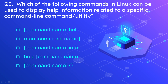Question number 3: Which of the following commands in Linux can be used to display help information related to a specific command or utility? Options are: command name followed by --help, man followed by command name, command name followed by info, help followed by command name, and command name followed by question mark. The correct answer is man followed by command name. Man stands for manual — for example, typing man ps will display the help and manual instructions about the ps command.